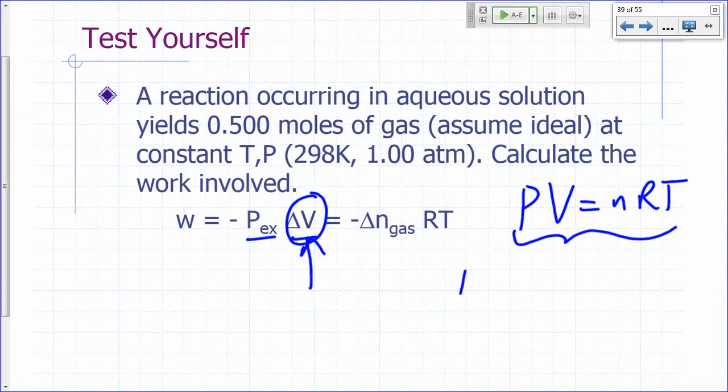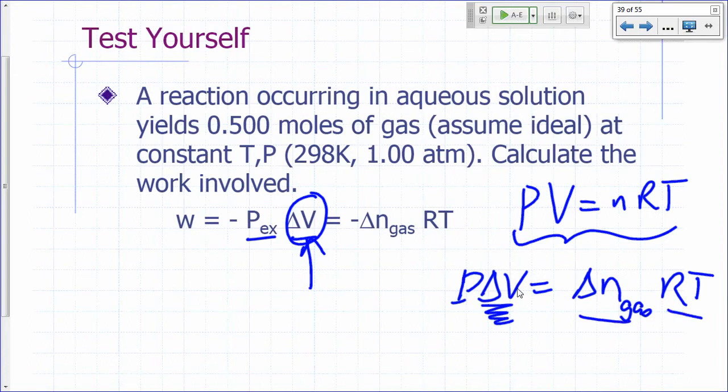P delta V would be due to a change in the number of moles of gas, delta N gas times RT. So at constant pressure, the change in the volume would be just delta N gas RT divided by P. So P delta V would just be delta N gas times RT. And so we use that to answer this question here.